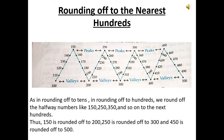As in rounding off to tens, in rounding off to hundreds we round off the halfway numbers like 150, 250, 350, and so on to the next hundred. Thus 150 is rounded off to 200, 250 is rounded off to 300, 350 is rounded off to 400, and 450 is rounded off to 500.